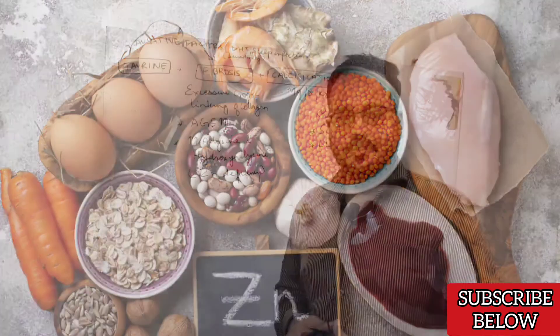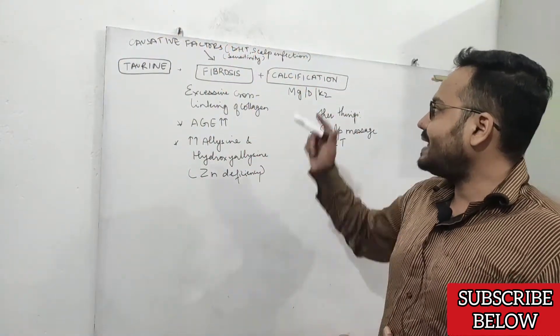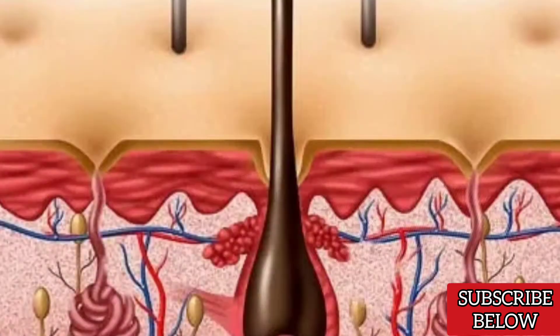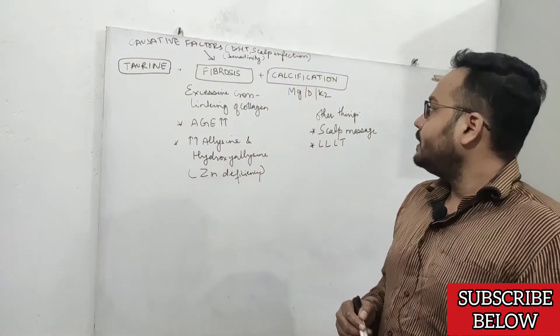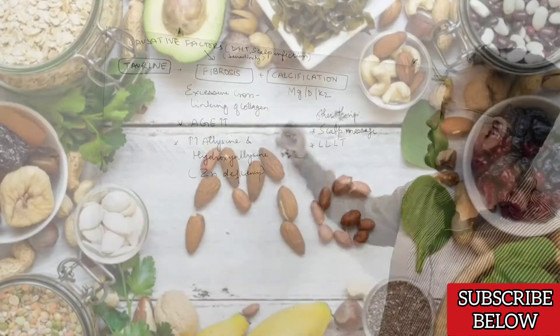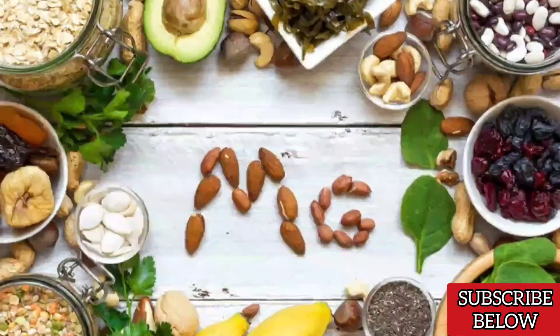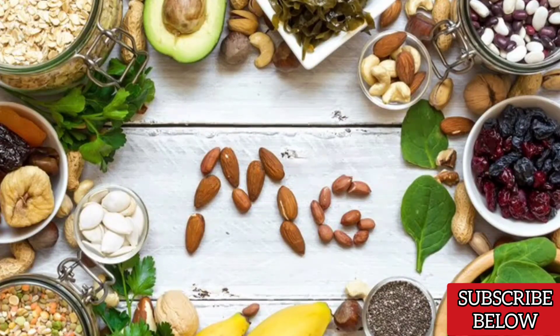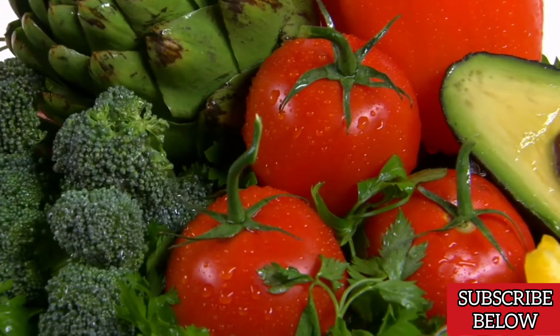The second important thing is calcification of the arteries inside your scalp which provide oxygen and blood to the root of your hair follicle. One of the most important things in preventing calcification is magnesium, and not many of us are getting enough magnesium through diet. If you eat only cooked food, the chances of magnesium deficiency are very high.